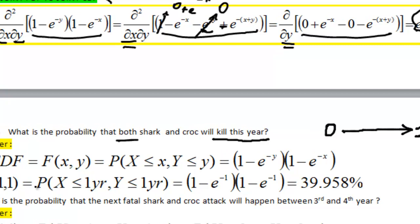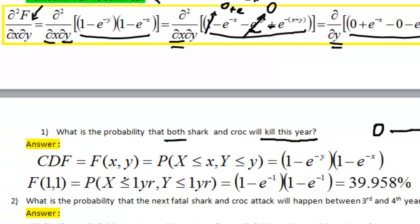So basically, what we have to do, we just plug the variables of interest directly into the CDF. And here's the setup. Big F of 1 and 1 is the same as probability that our x variable will be less than 1 year and y variable will be less or equal to 1 year.